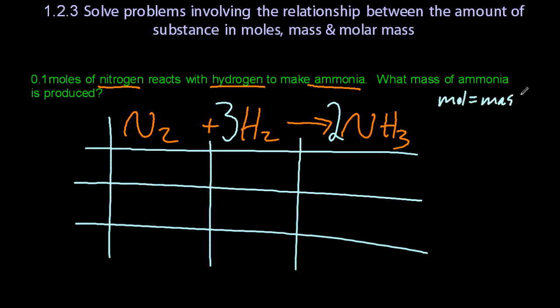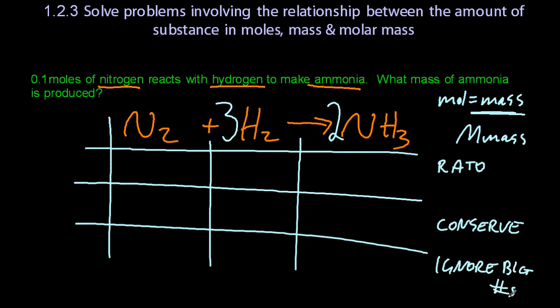Let's put the box in, and the equation, moles is mass over molar mass. And don't forget, the top line is the ratio line. The middle line is conserved, and for the bottom line, ignore the big numbers. Those are the most common mistakes people make, getting those mixed up. And again, we have moles, mass, and molar mass.